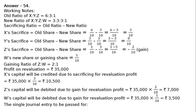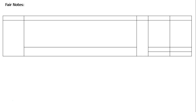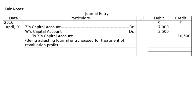The single journal entry to be passed is drawn in journal format with Rs symbols, dated 1 April 2016, when W was admitted. Gaining partners' capital accounts are debited, sacrificing partner's capital account is credited. Z's capital account debited Rs 7,000; W's capital account debited Rs 3,500; to X's capital account Rs 10,500. Being the adjusting journal entry passed for treatment of revaluation profit. Both debit and credit sides total Rs 10,500.